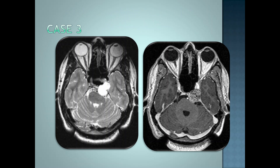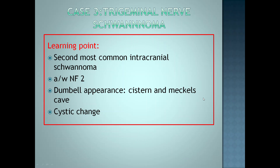Third case: we see an abnormality in the left CP angle cistern. There is a lobulated dumbbell-shaped lesion extending into Meckel's cave. It is markedly T2 hyperintense with heterogeneous enhancement. This is a trigeminal nerve schwannoma.